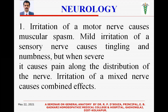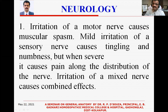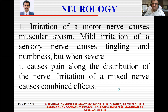Irritation of a motor nerve causes muscular spasm — this was seen in the study of myology. Mild irritation of a sensory nerve causes tingling and numbness, usually when it is compressed. For example, sitting on a chair for a long time can cause tingling and numbness in the lower limbs due to compression of the sciatic nerve. When the irritation is severe, it causes pain along the distribution of the nerve — just like sciatica. Irritation of a mixed nerve causes a combined effect of tingling, numbness, and pain — conditions we call sciatica and neuralgia.